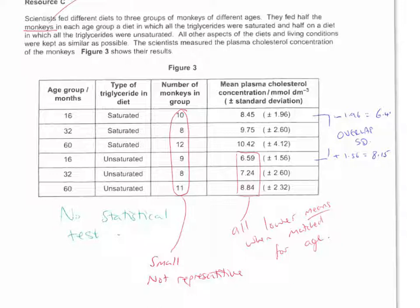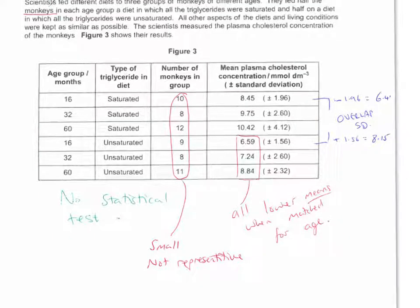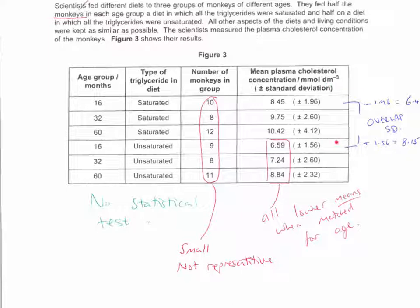So our agreed points would be that at all age groups, the mean is lowered. Another agree point would be we've used monkeys, so they've got similar physiology, closely related, so similar conclusions can be made. Our disagree mark points: standard deviations overlap at every age group. So they overlap for the 16s, these overlap for the 32s, and these overlap for the 60-month age group. At every age group, the standard deviations overlap, so it's not a significant decrease for unsaturated.